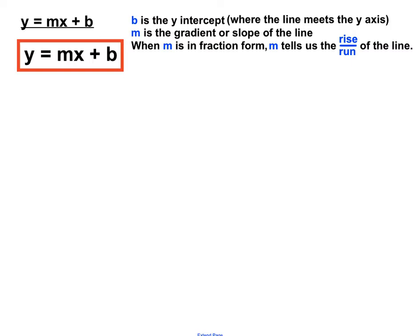It tells us the rise over the run, the relationship between how far up the line goes and how far across it goes. And when that m number is positive, the line leans to the right. When m is negative, the line leans to the left.